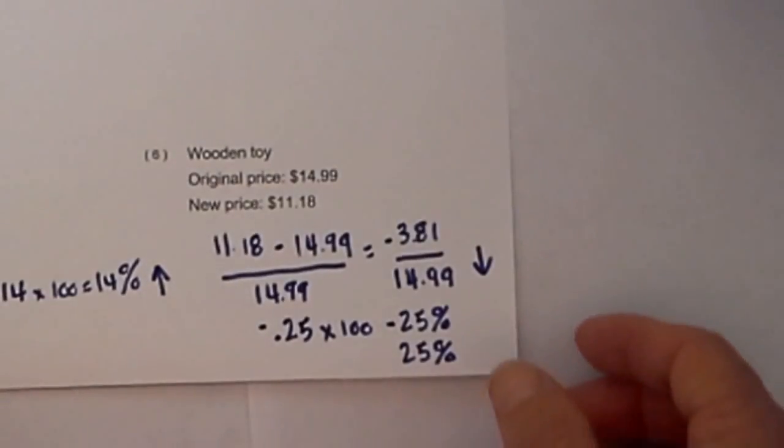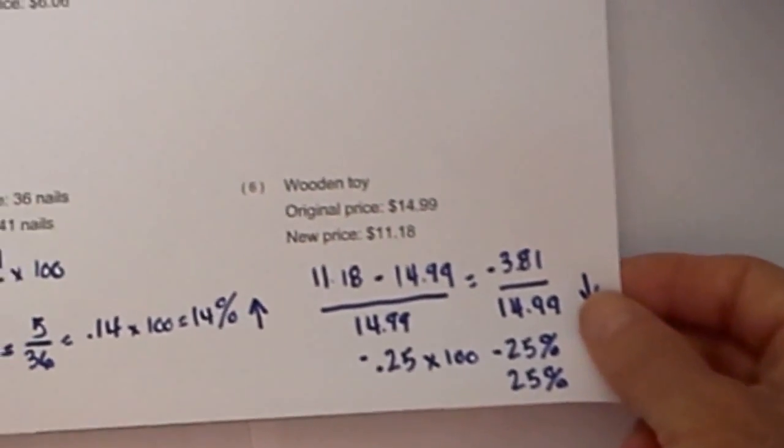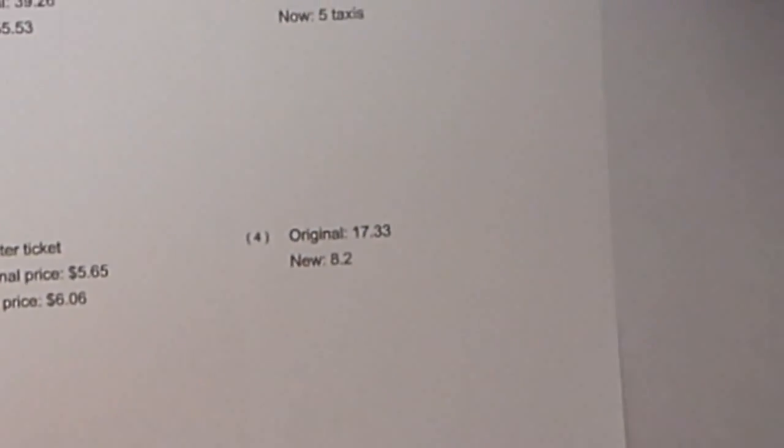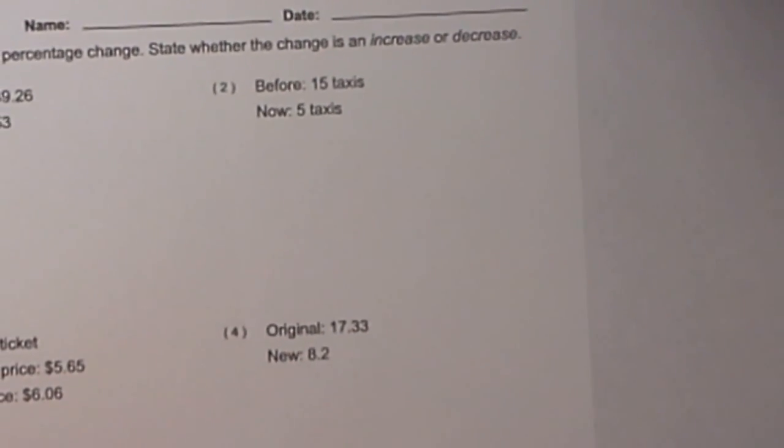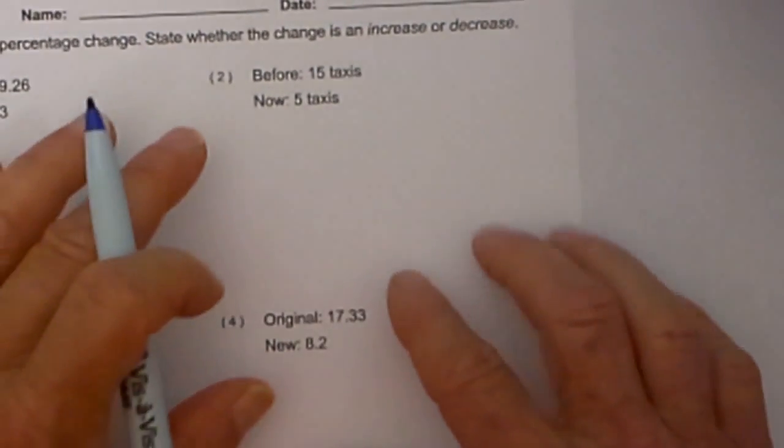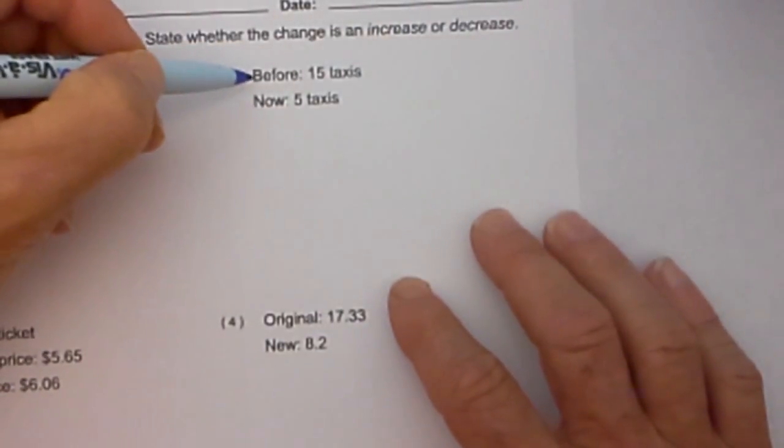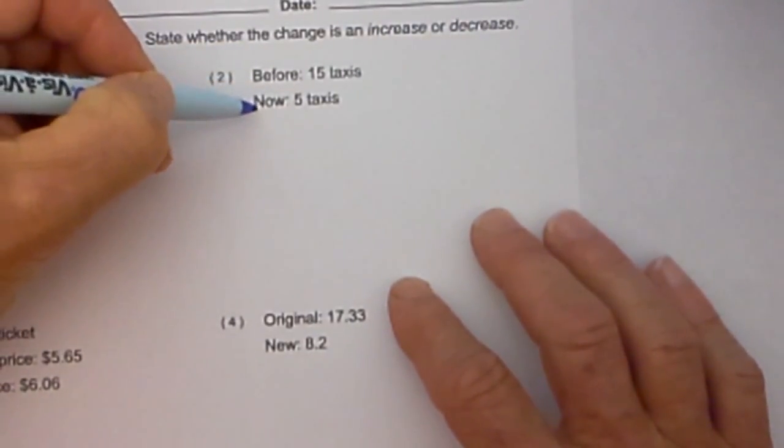That's how we work a negative. Let's do one more example. We'll move to number 2 here. You started with 15 taxis and now you have 5, so I'm going to use new minus old over old.